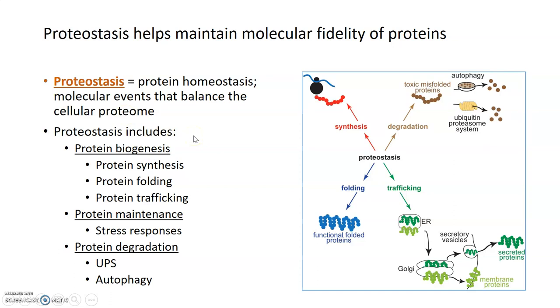In order to keep proteins functional and performing their jobs correctly, there are several different processes that are important. We need to be able to make proteins, as well as fold them and get them to the correct place. Proteostasis includes mechanisms of protein biogenesis - translation or protein synthesis, as well as protein folding and protein trafficking.